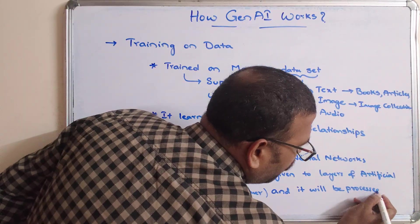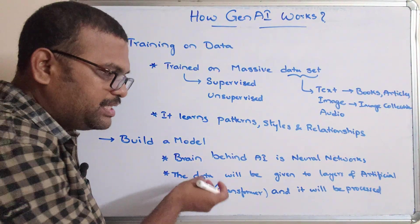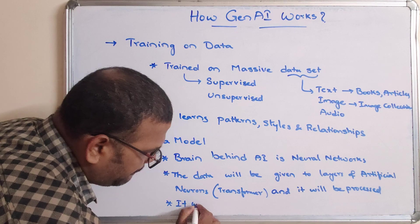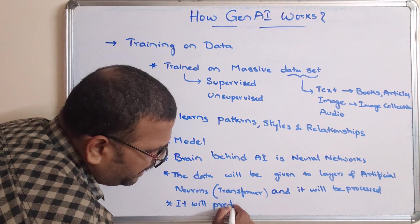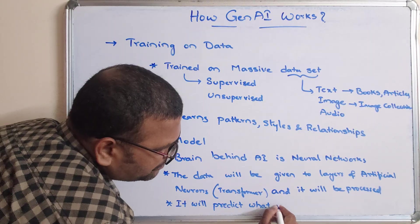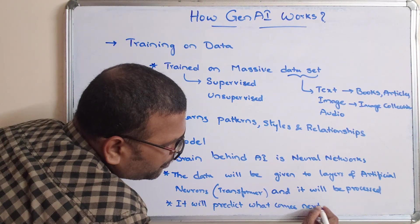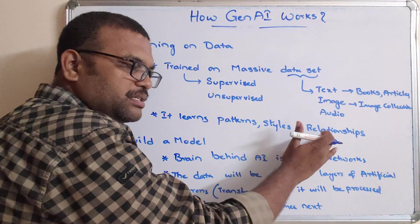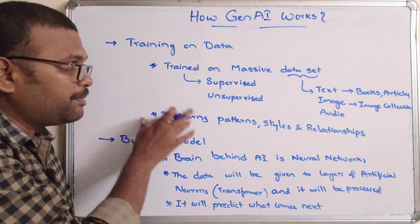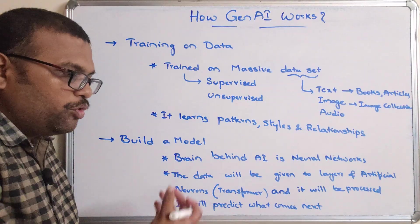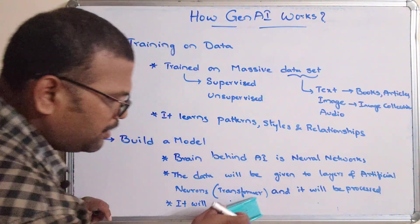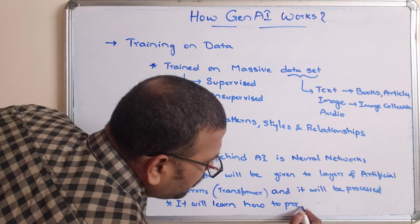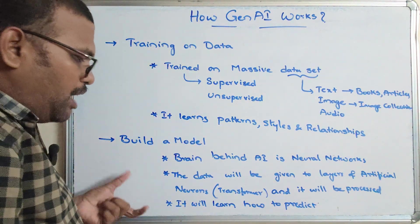After giving the data to the artificial neurons and processing it, the outcome is prediction — it will predict what comes next. Pattern matching is done here: it learns the patterns, styles, and relationships from phase one, and from phase two it learns how to predict.